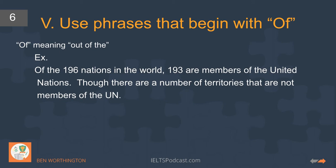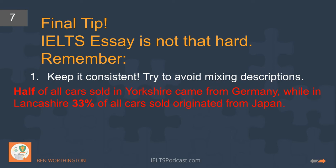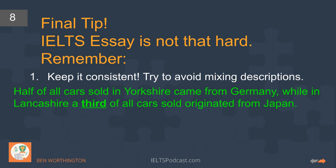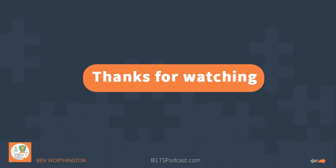The final tip is to keep it consistent. For example, 'Half of all cars sold in Yorkshire came from Germany, while in Lancashire 33% of all cars sold originated from Japan' is grammatically fine but inconsistent. A better version: 'Half of all cars sold in Yorkshire came from Germany, while in Lancashire a third of all cars sold originated from Japan' — keeping it consistent by using written fractions throughout instead of mixing formats.